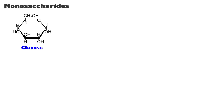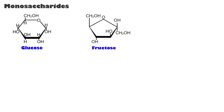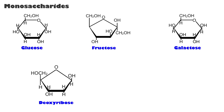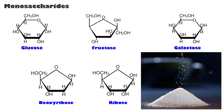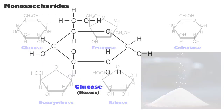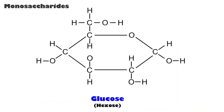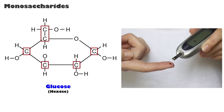Monosaccharides include glucose, fructose, galactose, deoxyribose, and ribose. Monosaccharides are a single unit of sugar and are the smallest carbohydrate. Glucose, a 6-carbon sugar (hexose), is the sugar in our blood.